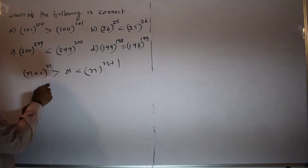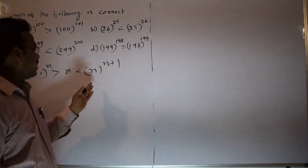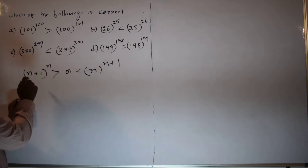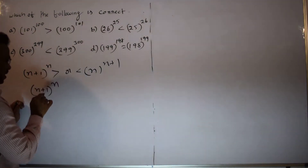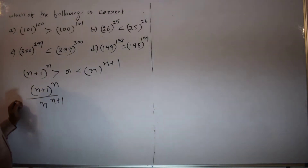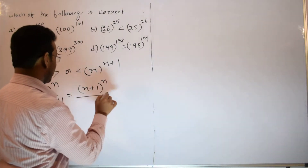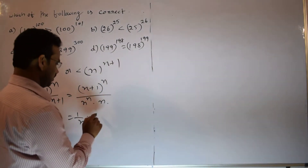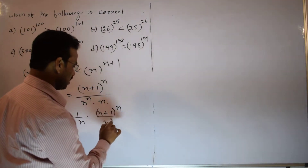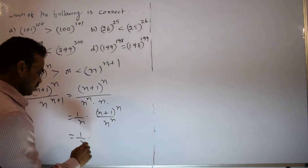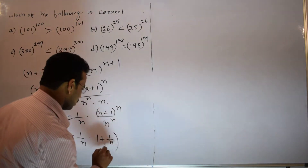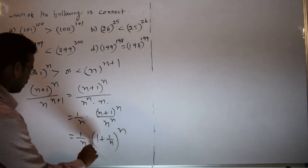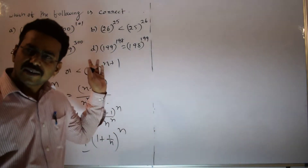I would like to calculate the ratio of these two. Let me compute (N+1)^N divided by N^(N+1). This equals (N+1)^N divided by N^N times N, which equals (1/N) times (N+1)^N divided by N^N, which simplifies to (1/N) times (1 + 1/N)^N. This is the final simplified form.